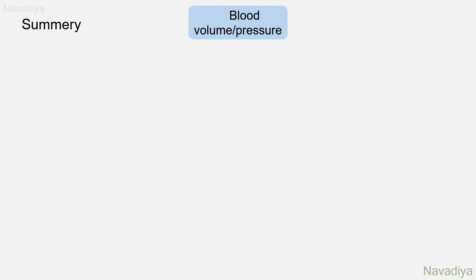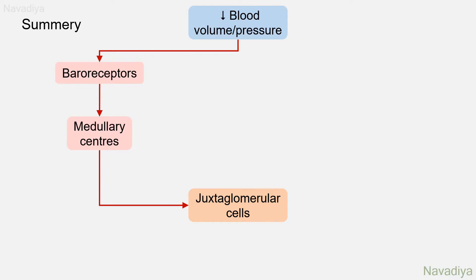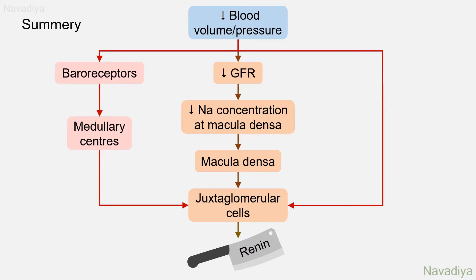Summary: The renin angiotensin system is involved in regulation of blood volume and blood pressure. Falling blood volume or pressure are detected at three sites. First, baroreceptors — on sensing the fall, they send signals to the medullary centers in the brain, which in turn signal juxtaglomerular cells to increase renin release. Second, falling blood volume or pressure decreases GFR, which decreases sodium concentration at the macula densa; macula densa senses this fall and signals juxtaglomerular cells to release renin. Finally, juxtaglomerular cells themselves can also detect fall in pressure via their inbuilt stretch receptors.